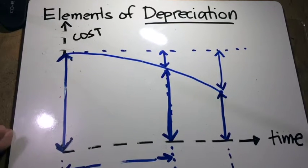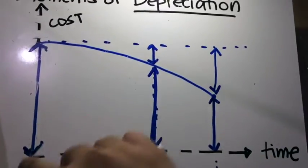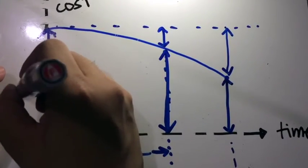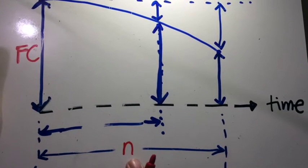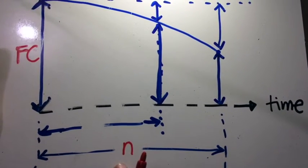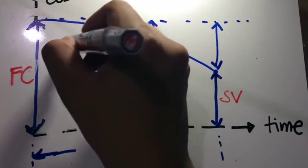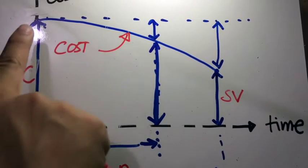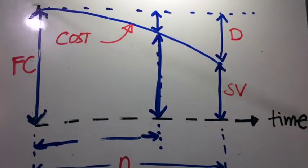That's what we call depreciation. I have here a graph to show that. Let's have the x-axis equal to time and the y-axis representing the cost. Now, at the start of my period, when I buy the item, I have here the first cost, which is large. And after the lifespan of the item — we represent the lifespan as n — we have here the salvage value. This line shows us the cost of our item, and as you can see, it will degrade the cost as time passes by. So this is the salvage value, and this here is what we call the depreciation.